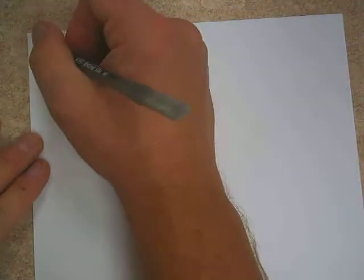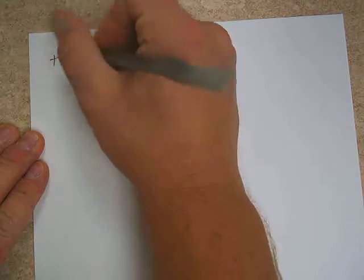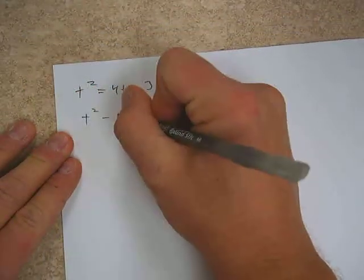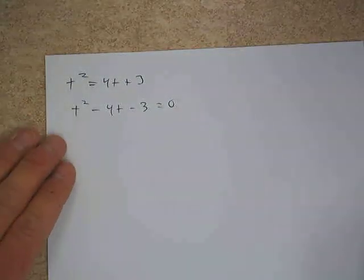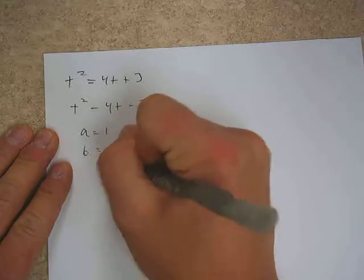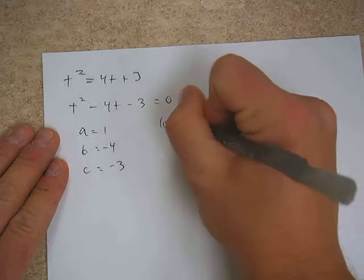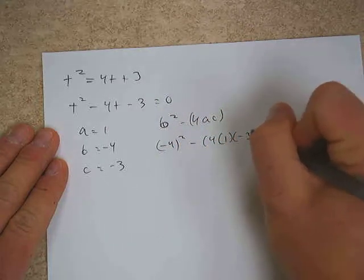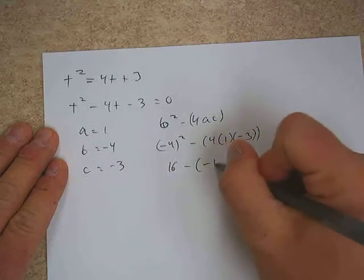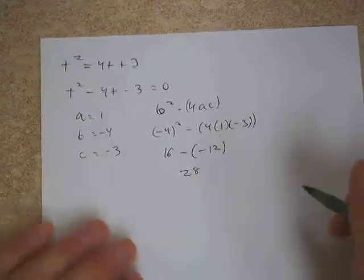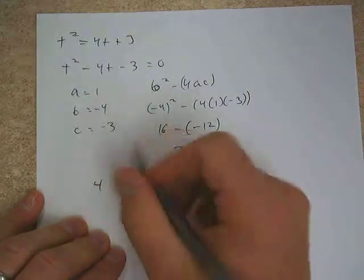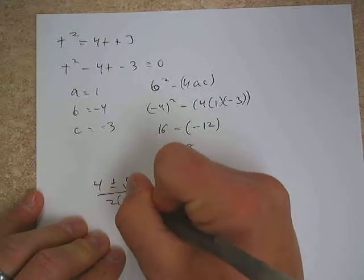Let's look at number 5 on the book assignment, page 385. An important note: make sure you get everything on the same side. Moving the 4t and 3 to the left side, we identify a = 1, b = negative 4, c = negative 3. We then calculate the discriminant: negative 4 squared minus 4 times 1 times negative 3, giving us 16 minus negative 12, which equals 28. Since the discriminant is positive, we'll have two real solutions.